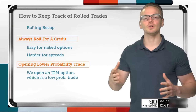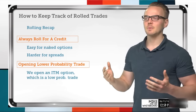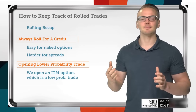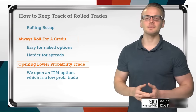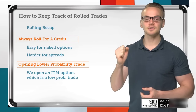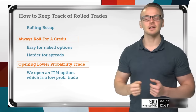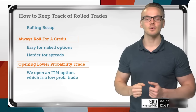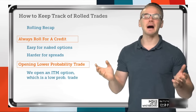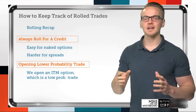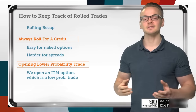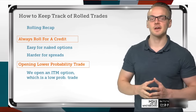Let's go to the first slide and talk about rolling and what it really means in its entirety. When we're talking about rolling, basically what we're doing is keeping our dream alive. When we roll, we're closing our current position — so if we're selling an option or selling a strategy, we would be buying back that strategy and then selling a new one in a different expiration cycle.